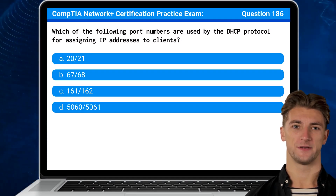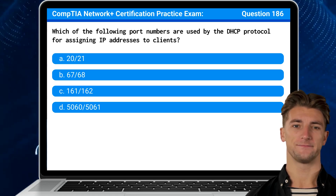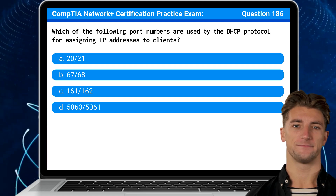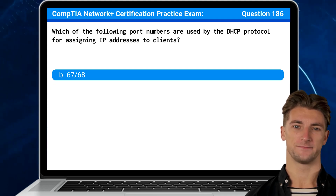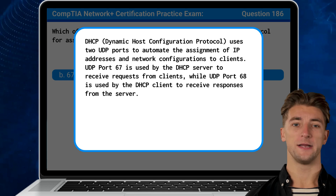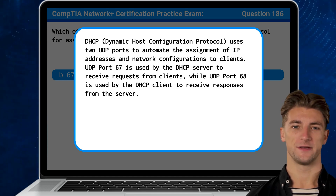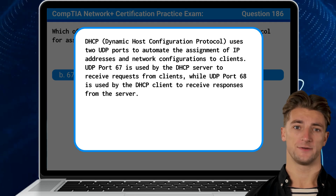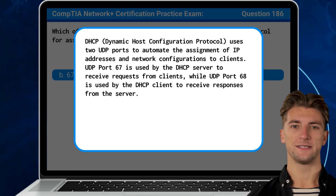Question 186: Which of the following port numbers are used by the DHCP protocol for assigning IP addresses to clients? The answer is B, 67 and 68. DHCP, or Dynamic Host Configuration Protocol, uses two UDP ports to automate the assignment of IP addresses and network configurations to clients. UDP port 67 is used by the DHCP server to receive requests from clients, while UDP port 68 is used by the DHCP client to receive responses from the server.